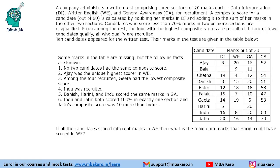Question 4: If all candidates score different marks in WE, what is the maximum marks Harini could score in WE? Scores of 20, 19, 18 are taken. Testing 17: gives composite 27 + 20 = 47, but Falak already has 47 — not allowed. Testing 16 and 15 — not possible. Testing 14: gives 24 + 20 = 44, which is possible. So the maximum Harini can score in WE is 14 marks.